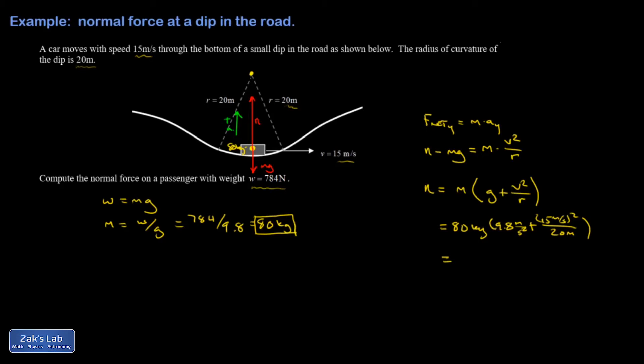You should verify the units are all working. In this numerator, I have meters squared over seconds squared, then I divide by meters, so I have meters per second squared. Those are units of acceleration, just like g had attached to it. Units of mass over here times units of acceleration gives me newtons.